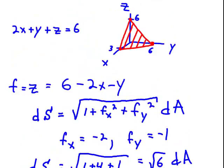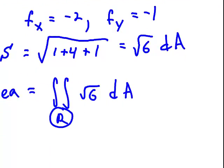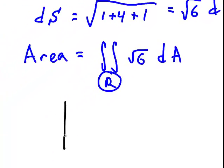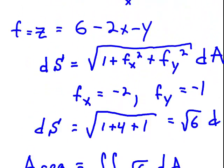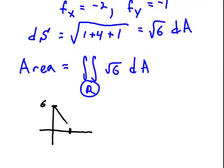R is obtained by projecting the graph in red, the plane in red, down to the xy plane. And we get a triangular region, as you can see. In fact, the triangular region we get goes from 0 to 3 on the x and 0 to 6 on the y. So this is our region R, right here.